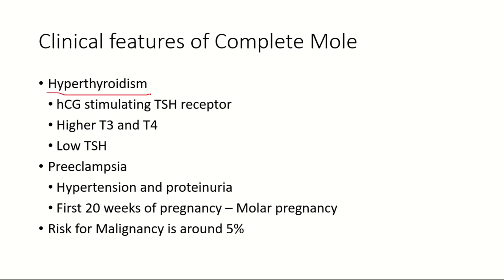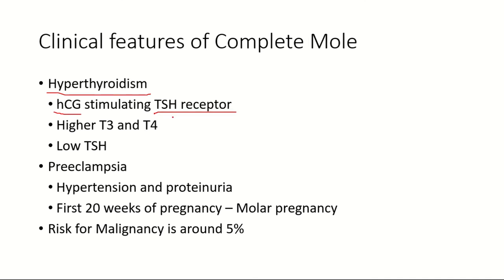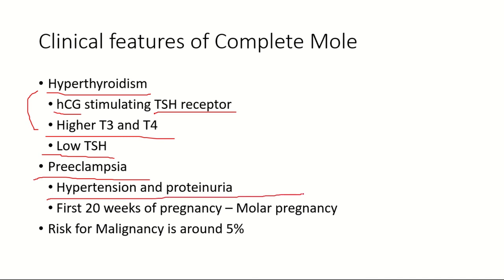Hyperthyroidism can also be seen in complete mole, due to stimulation of TSH receptors by hCG. Because hCG and TSH share a similar alpha subunit, hCG can bind to TSH receptors and stimulate them, leading to higher levels of T3 and T4 and causing hyperthyroidism, along with a low TSH level due to negative feedback.